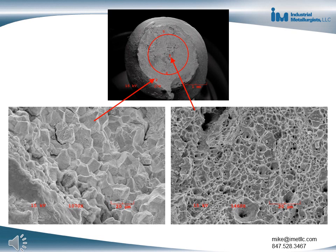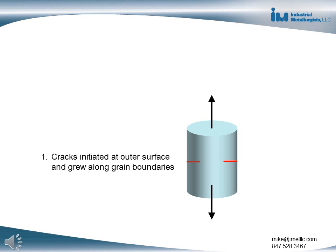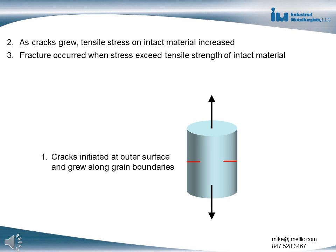Dimpled metal was present at the inner portion of the fracture surface, indicating that the metal in that region was exposed to a stress that exceeded the tensile strength of the metal. Based on this information, it can be concluded that the crack initiated on the outer surface and grew inward along the metal grain boundaries. As the crack grew, the stress in the remaining intact cross-section increased until the fastener fractured when the stress exceeded the tensile strength of the intact metal.